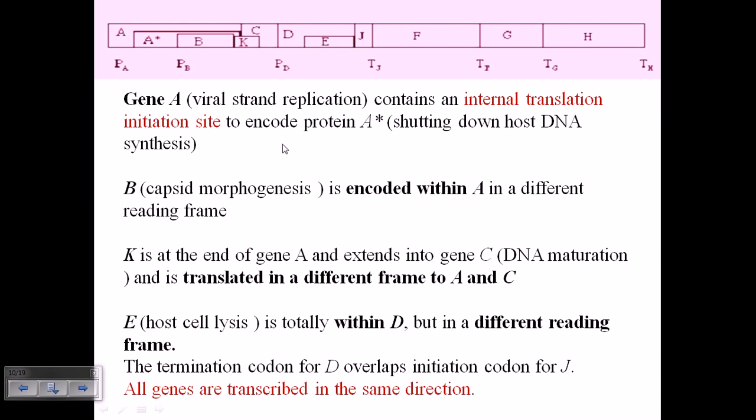Whether they are placed in overlapping sequence or not, the expression will be varied. For example, gene E is completely within gene D but in a different reading frame. So that means if we are expressing gene D, it won't mean that it will express gene E because they are placed in different reading frames.